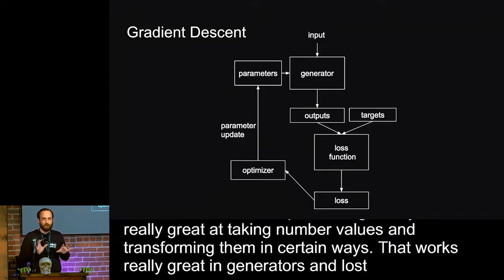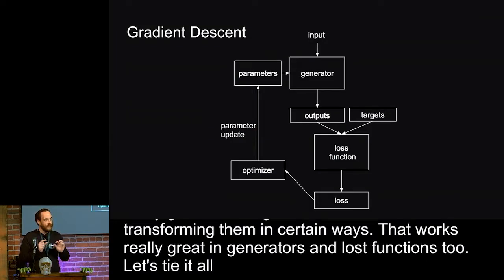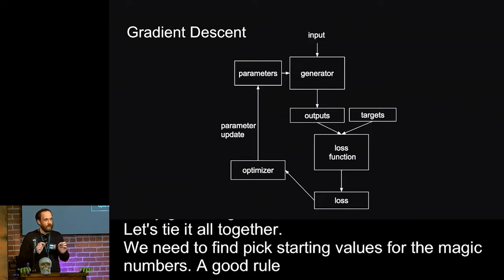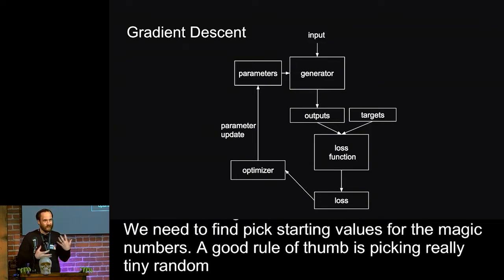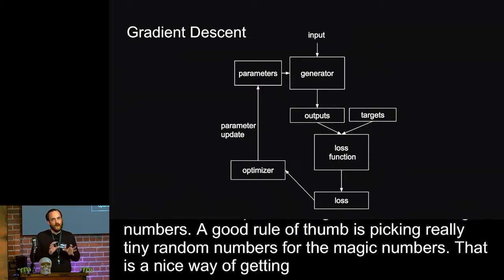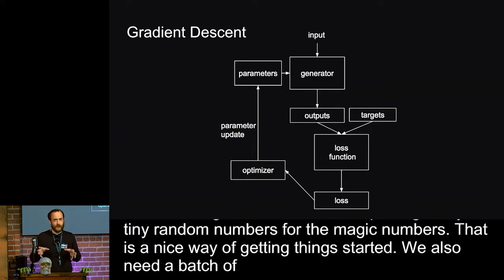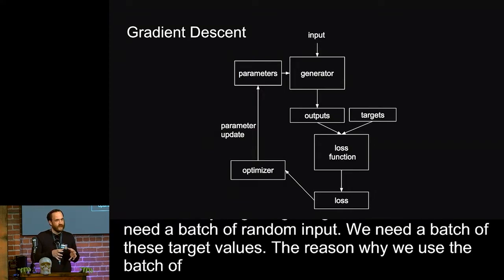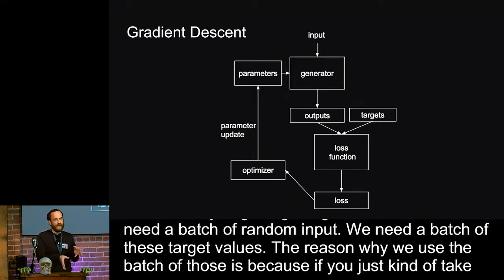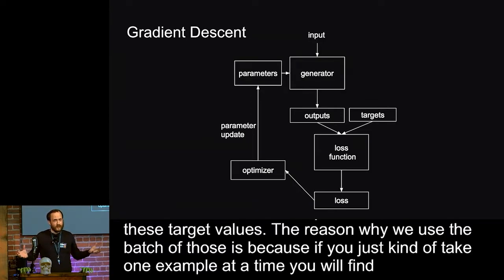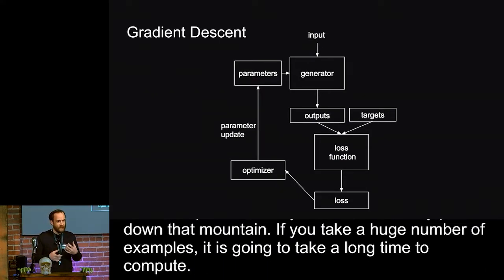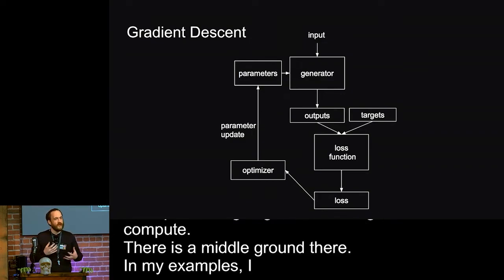So let's tie it all together. We need to first pick some starting values for these magic numbers. A good rule of thumb is just picking really tiny random numbers for the magic numbers. That's just a really nice way of getting things started. And we also need a batch of random input. We need a batch of these target values. And the reason why we use a batch of those is because if you just take one example at a time, you're going to find a really windy path down that mountain. On the other hand, if you take a huge number of examples, it's going to take a really long time to compute. So there's kind of a middle ground there. In my examples, I used a batch size of 32. And that's where the mini-batch idea comes from.